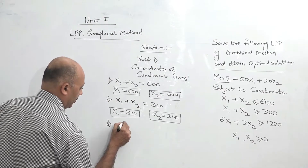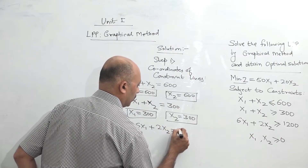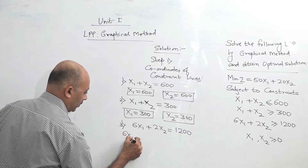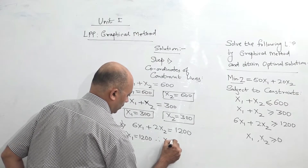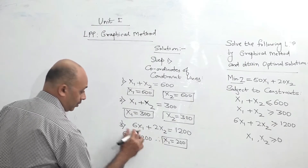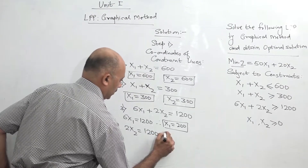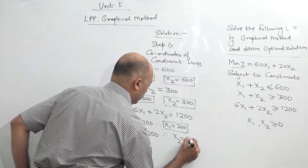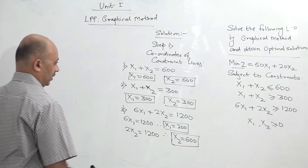Third constraint: 6x1 plus 2x2 equals 1200. To find x1, assume x2 as 0, so x1 will be 200. To find x2, assume x1 as 0, so 2x2 equals 1200, giving x2 equal to 600. So these are the coordinates of the constraint lines.